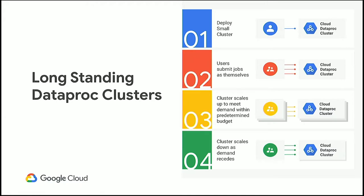We also have customers that tell us they have scenarios for semi-long-running Cloud Dataproc clusters. Examples include a shared cluster for interactive or ad hoc analysis, often with web notebooks like Jupyter or Zeppelin, or BI applications built on tools like Druid. We have plenty of features that help with this as well — things like our high availability mode or our autoscaler. I actually wrote an article a couple months back on my top 10 tips for running long-standing Dataproc clusters, with a webinar associated with it.